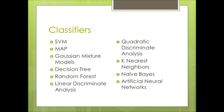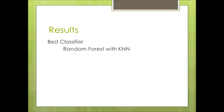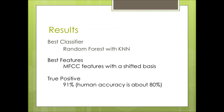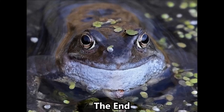We investigated 10 different classifiers and several combinations of these. The best classifier was a combination of random forest and k-nearest neighbor using features found from the Mel frequency cepstral coefficients. This achieved a true positive rate of 91%, which is 11% higher than a trained human.